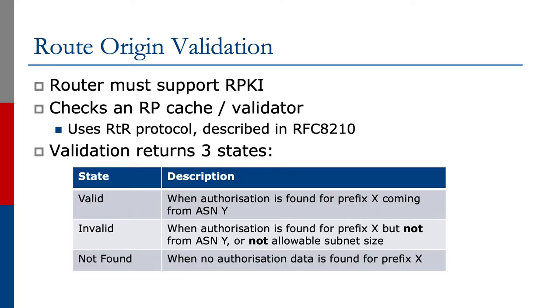Now let's look at route origin validation. For this, a router must support RPKI. The router will check the validator using the RTR protocol. RTR is the RPKI to router protocol described in RFC 8210.